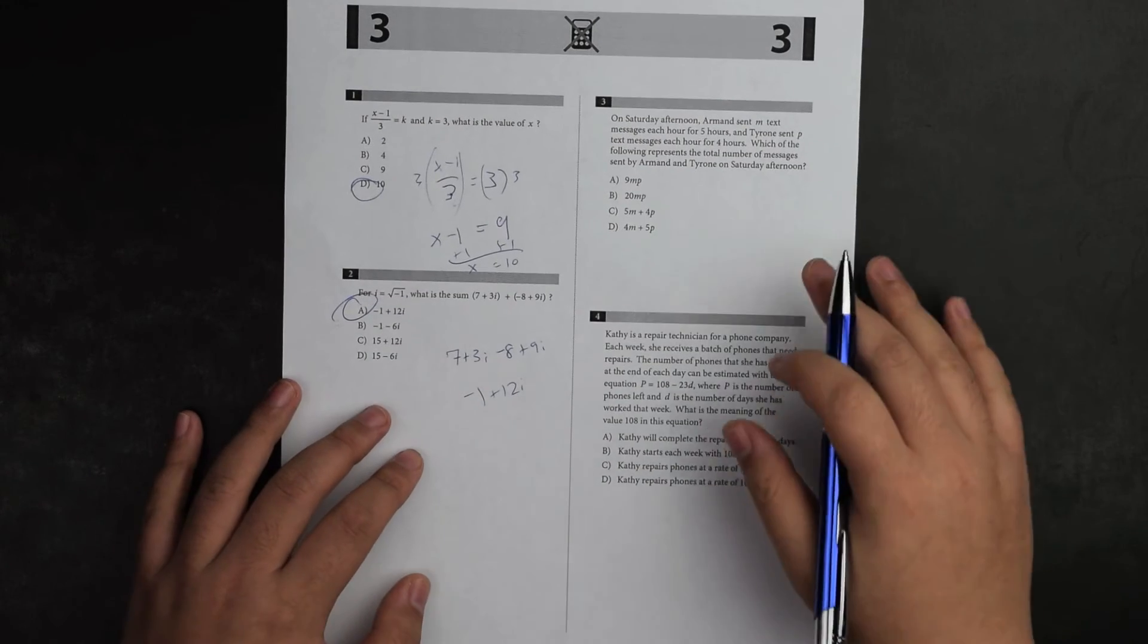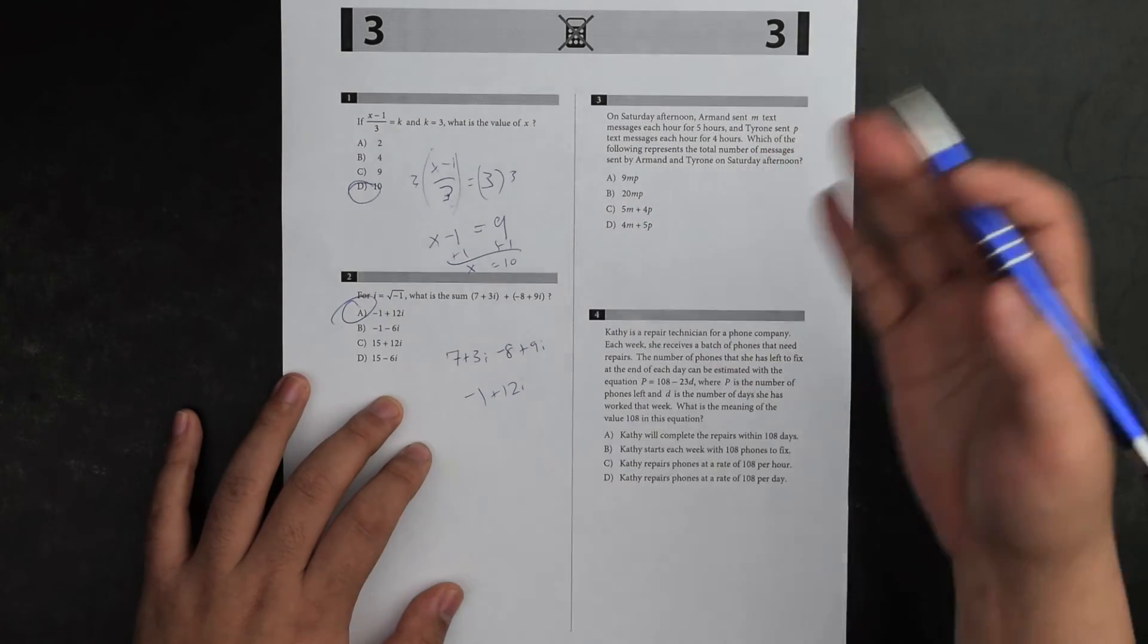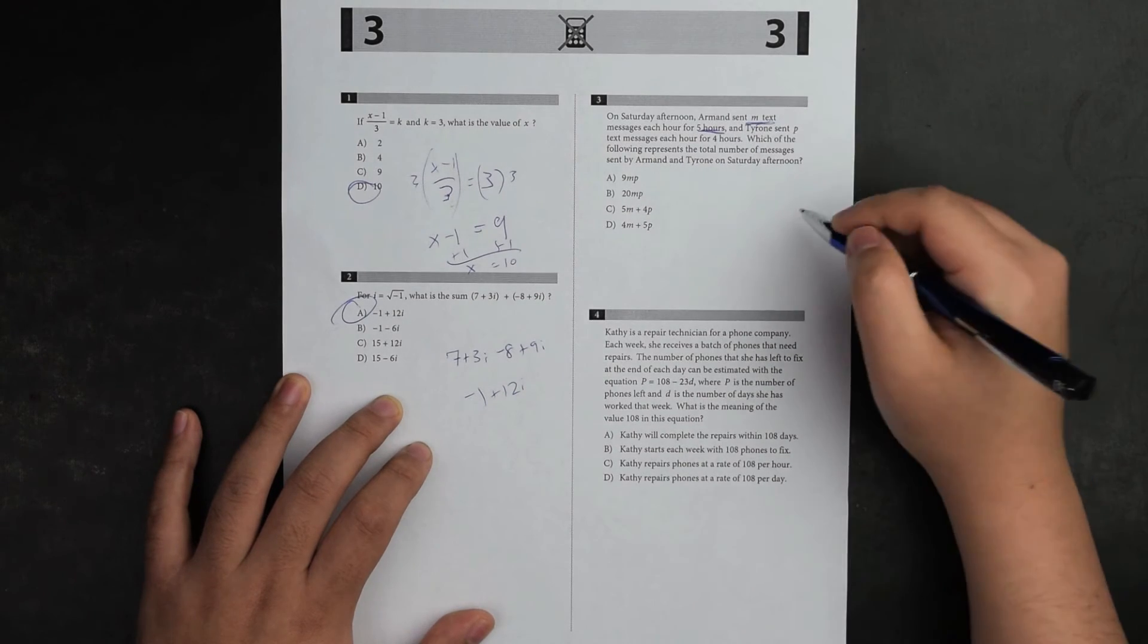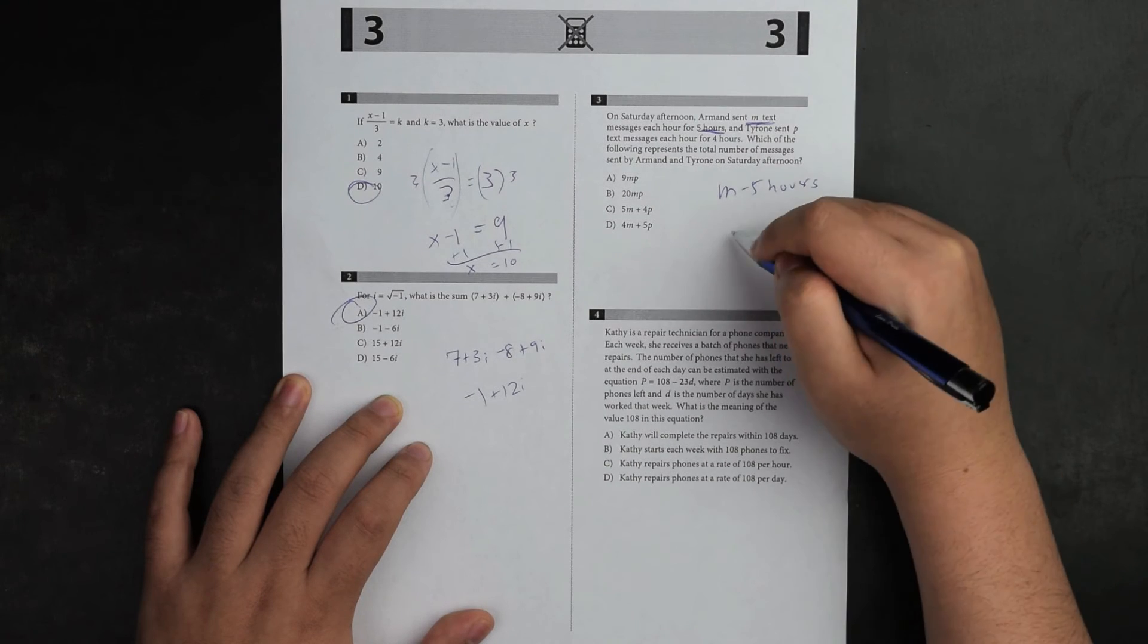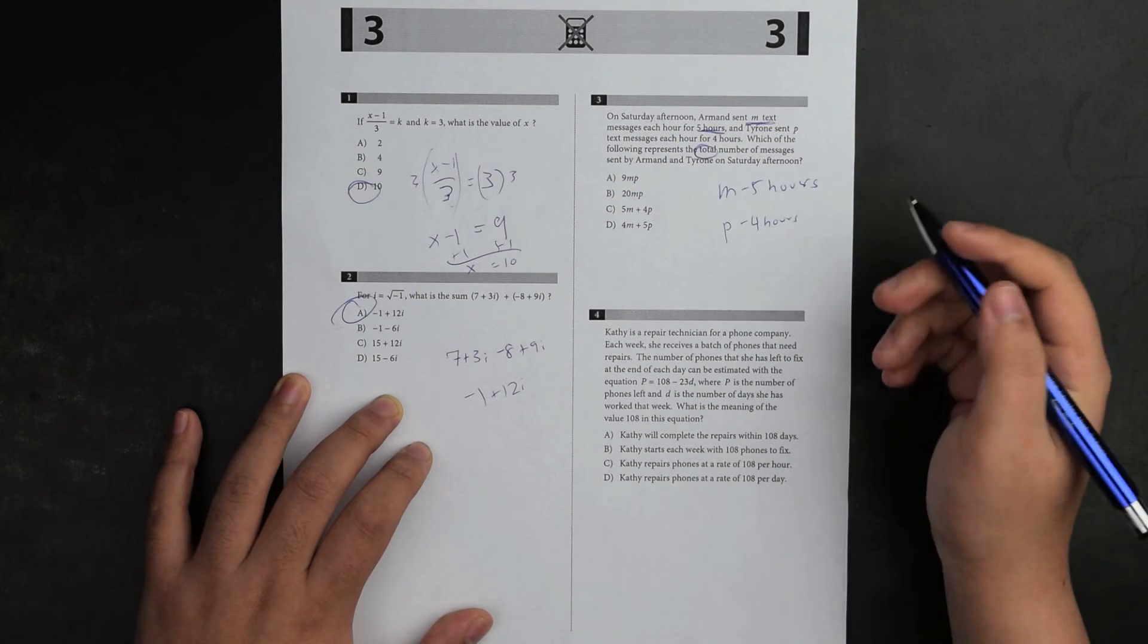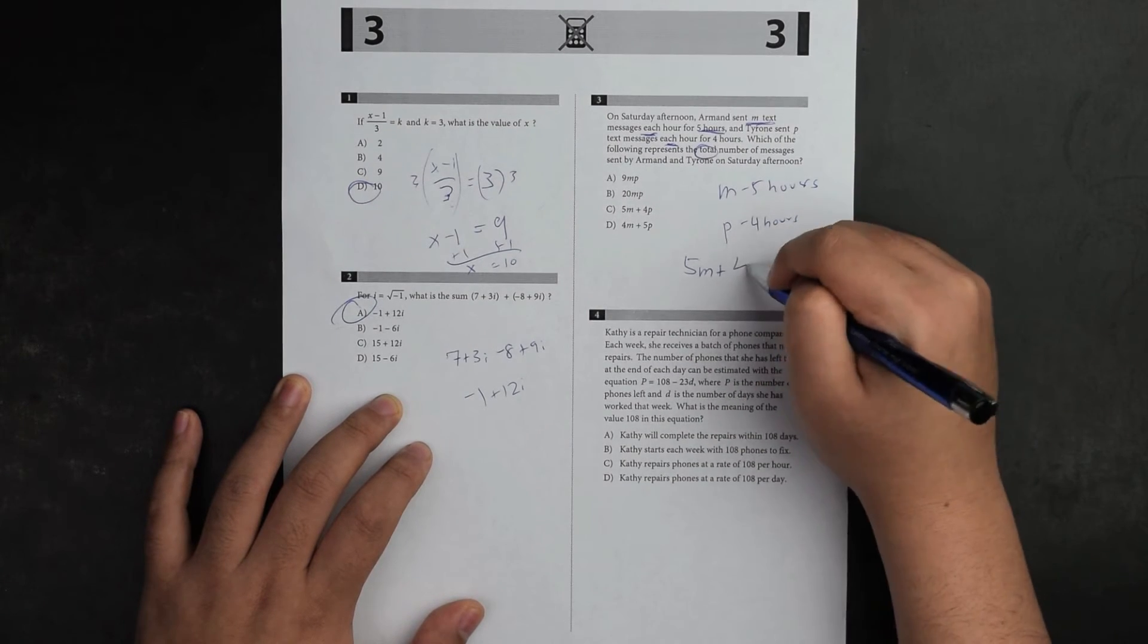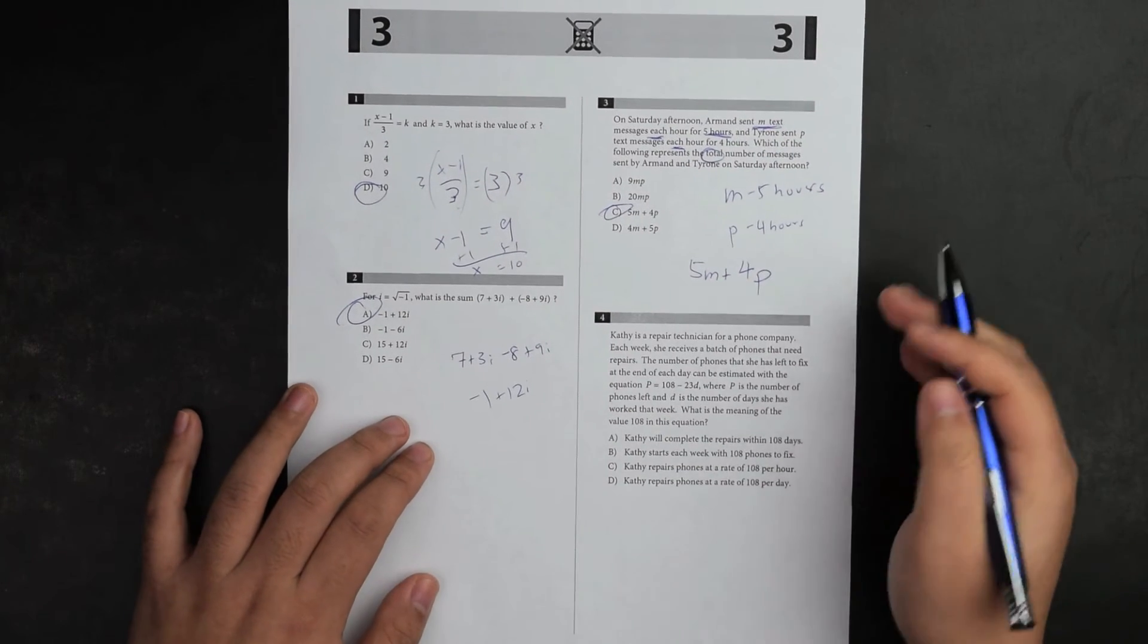For the last question today, number three. On Saturday morning, Armand sent m text messages each hour for five hours, and p each for four hours. Since it's each hour, I notice it's 5m plus 4p since I want the total. The final answer is C.